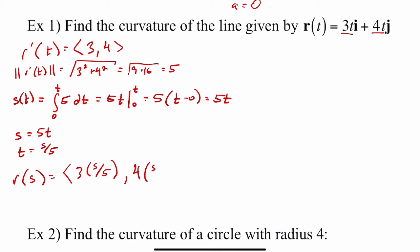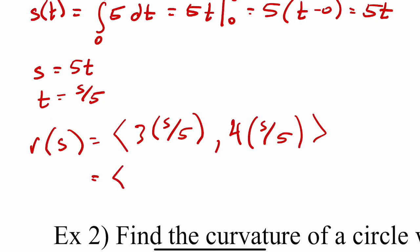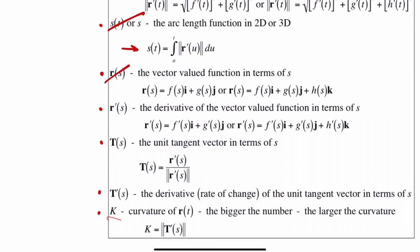And then the y component was 4t. And instead of a t, I have s over 5. This would be 3s over 5 comma 4s over 5. So we have found r(s).